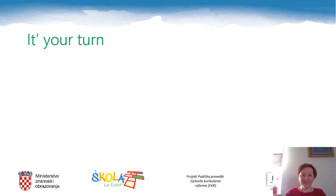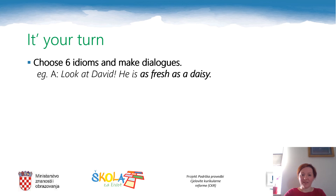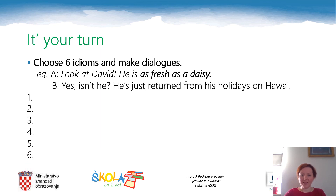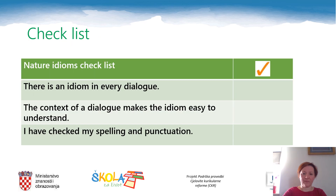It's your turn now to be creative. I would like you to choose six idioms and make dialogues. Here is an example: 'Look at David — he's as fresh as a daisy.' 'Yes, isn't he? He's just returned from his holidays in Hawaii.' You will have to stop the video now, take your notebooks, and write down your six dialogues. When you finish, check the table to see if you have included all the necessary elements: an idiom in every dialogue, a context that makes the idiom easy to understand, and no spelling or punctuation mistakes.